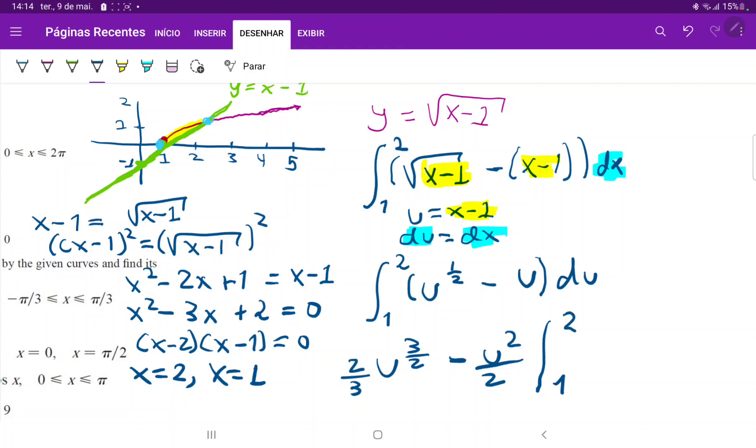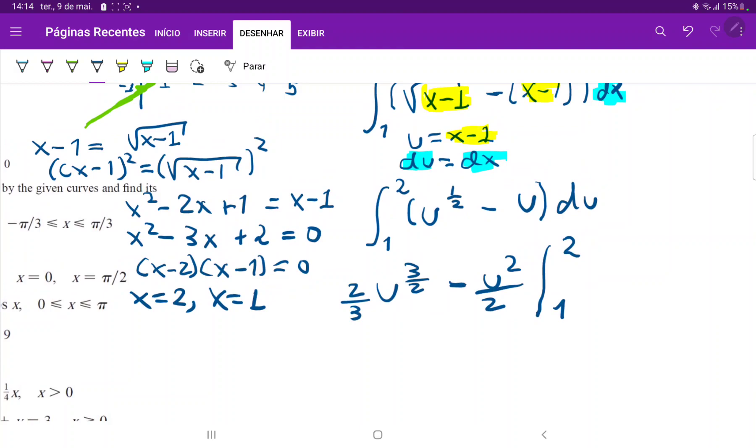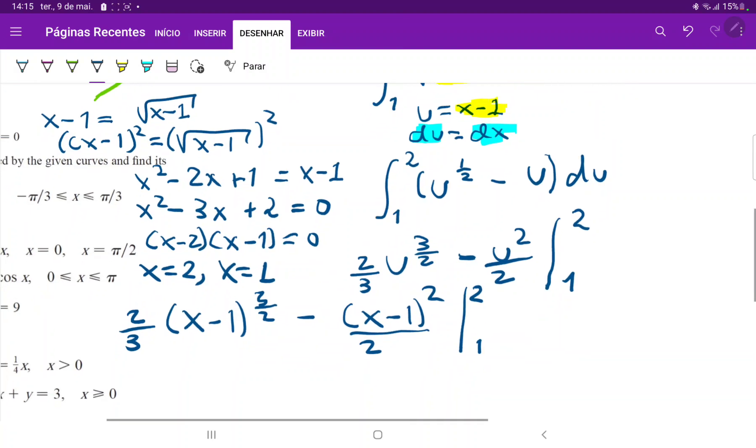So let's just put back our boundaries, and then, sorry, let's substitute u back, and then evaluate our boundaries. So this is two over three times x minus one to the three halves minus x minus one squared over two, and all of this evaluated from one to two.